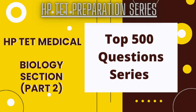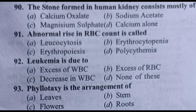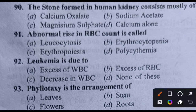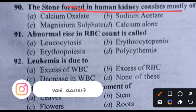There are many videos about psychology, chemistry, and biology so you can also see those videos here too. Let's go to our questions. Question number 90: The stone formed in human kidney consists mostly of what?